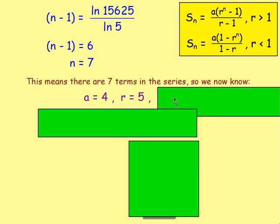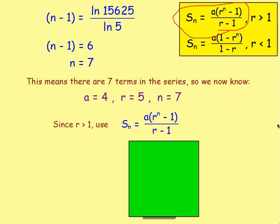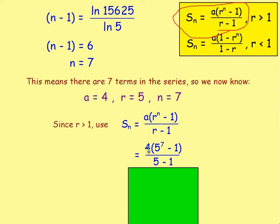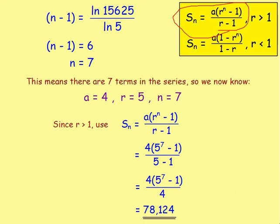We already knew a, we know r, and now we know n is 7. Because r equals 5, which is bigger than 1, we use the top formula. The sum of the first 7 terms equals 4 times 5 to the power of 7 take away 1, over 5 take away 1. The bottom simplifies: 5 take away 1 is 4, and dividing top and bottom by 4 leaves 5 to the power of 7 take away 1. Using a calculator, that gives 78,124.